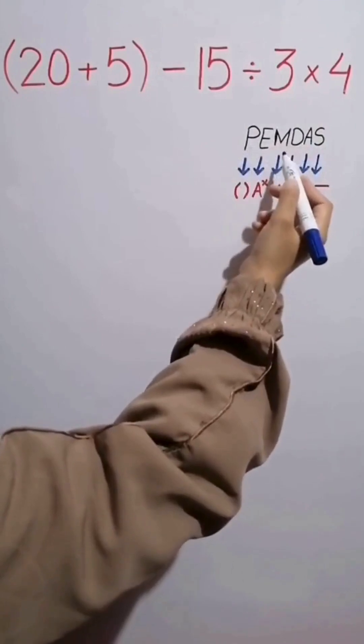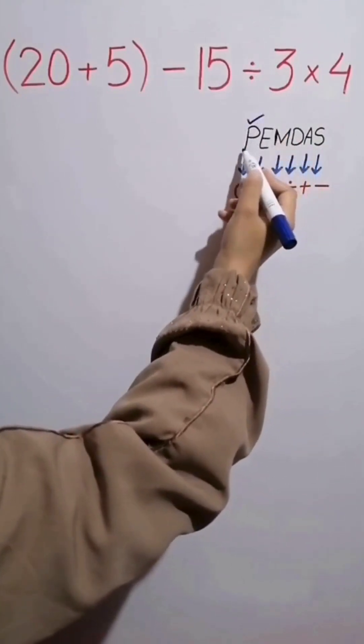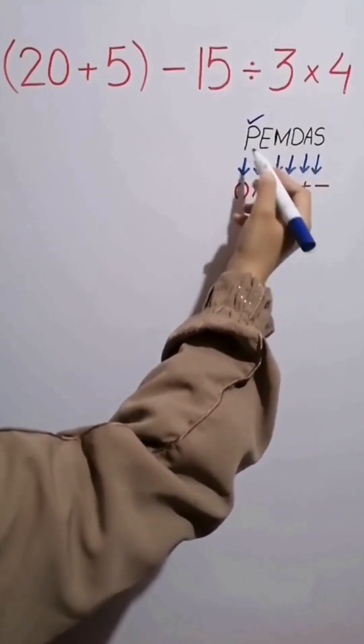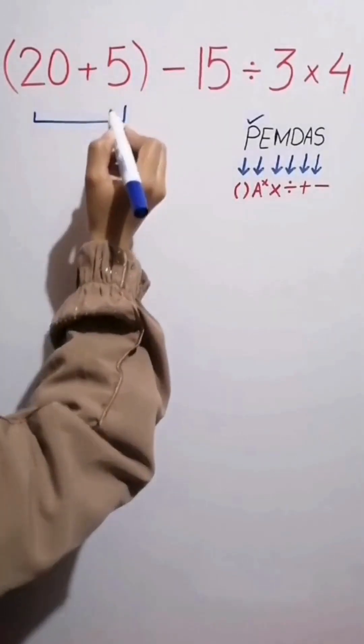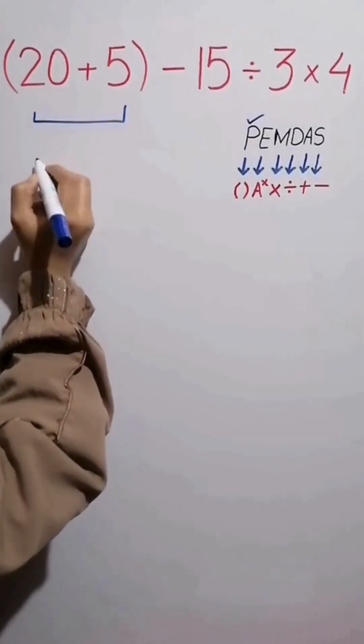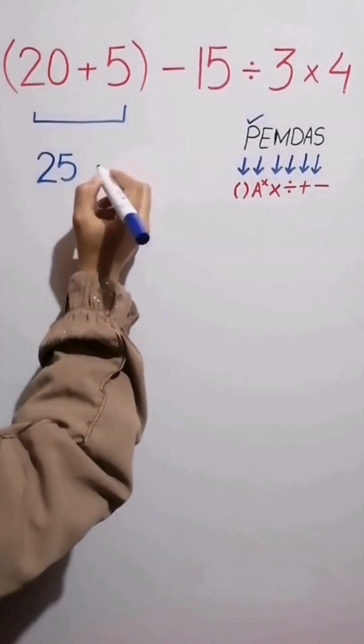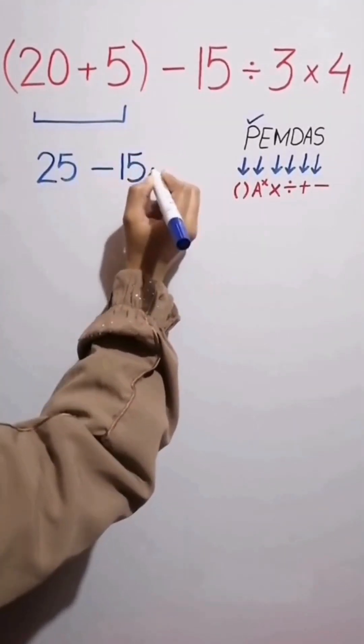Okay, according to the PEMDAS rule, first we go to the parenthesis because parenthesis have the highest priority over all other operations. And simplify this expression as 20 plus 5 equals 25, then minus 15 divided by 3 times 4.